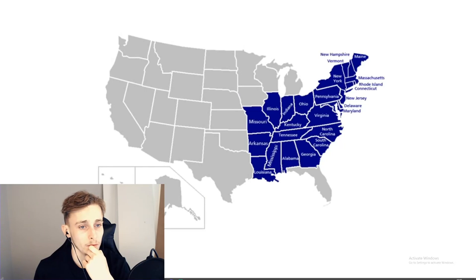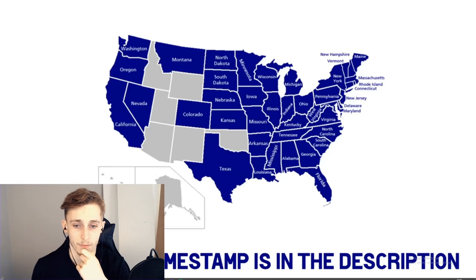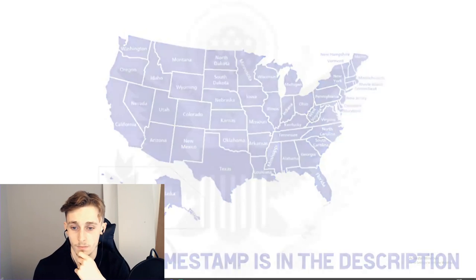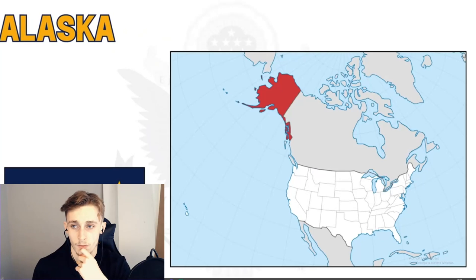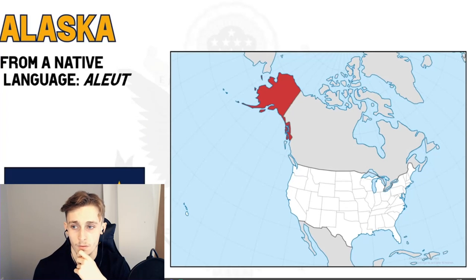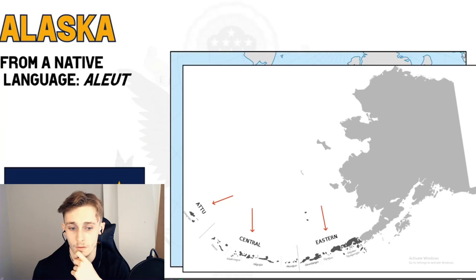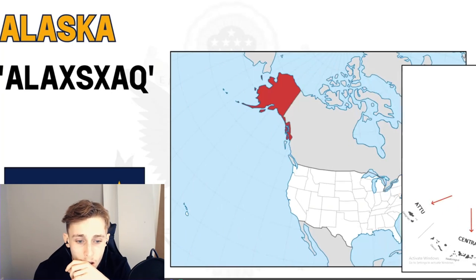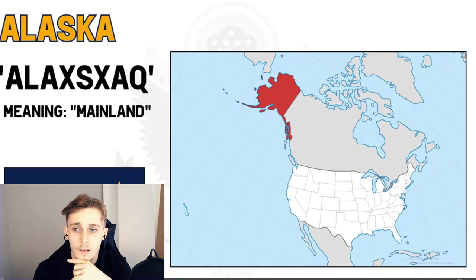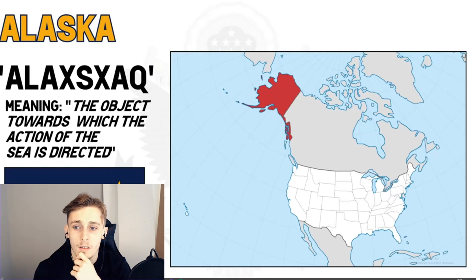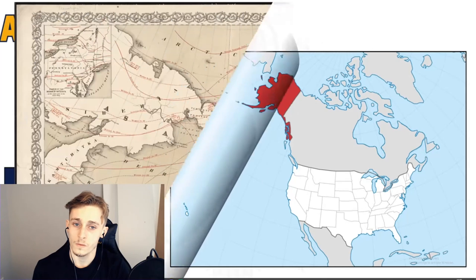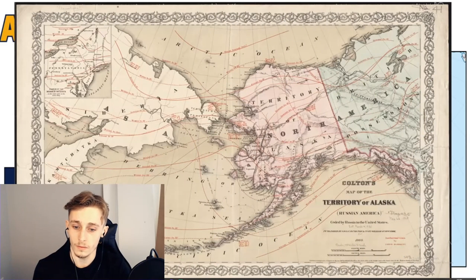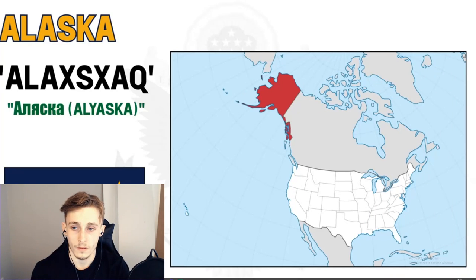There's a somewhat common pattern: a native tribal group names a local river, which names a colonial territory, which transitions into statehood. Starting with the two non-contiguous states — Alaska's name comes from the native Aleut language, from the word 'alaxsxaq,' meaning 'mainland' or literally 'the object towards which the action of the sea is directed' — the place where the waves hit. Alaska was first colonized by the Russian Empire, who sold it to the United States, naming their colony 'aliaska' in 1666.